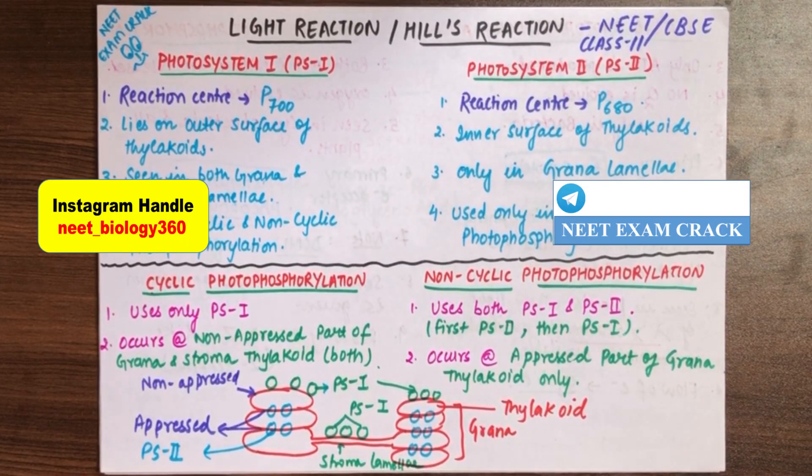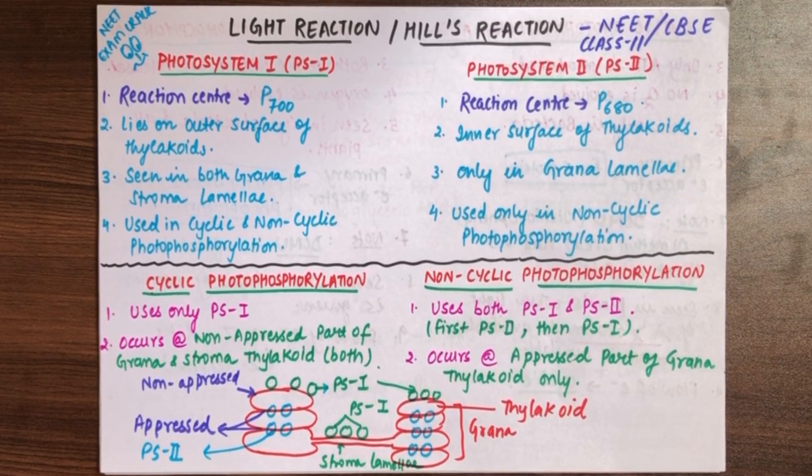Hello students, welcome back to Neat Exam Crick. I hope you all are doing well. Today's video is on light reaction and hill reaction. We will see how many photosystems are in light reaction and hill reaction, along with that we will also discuss the type of photophosphorylation that is cyclic and non-cyclic. We will see differences in both the type of photophosphorylation.